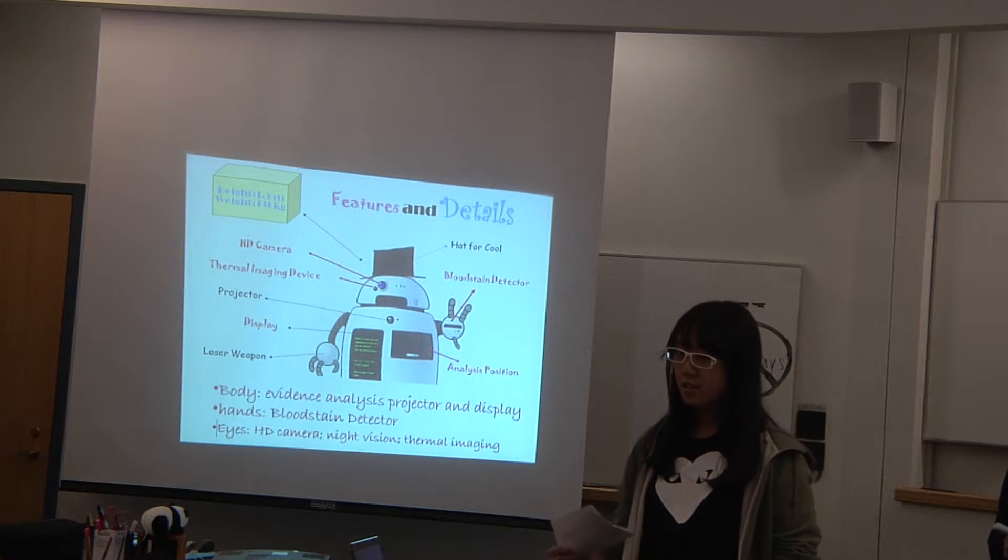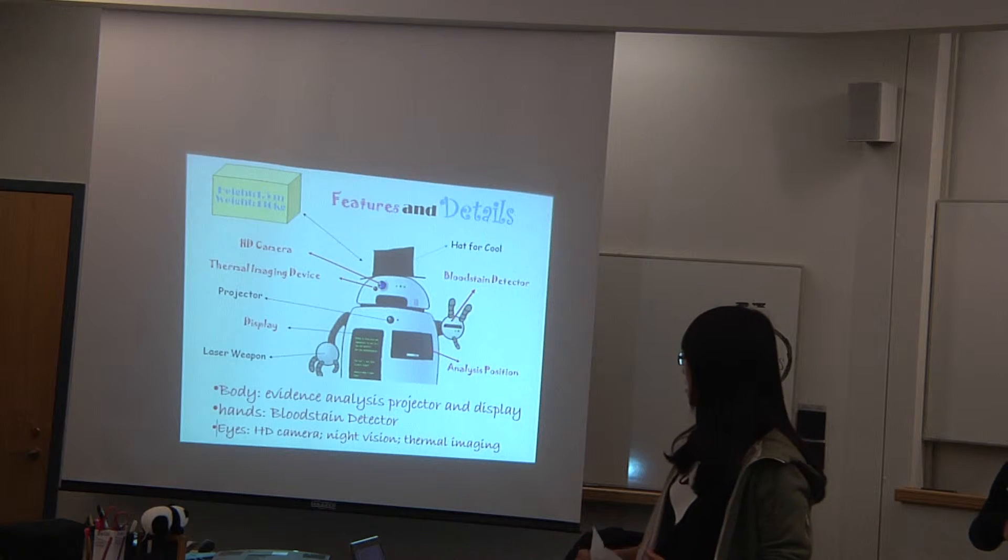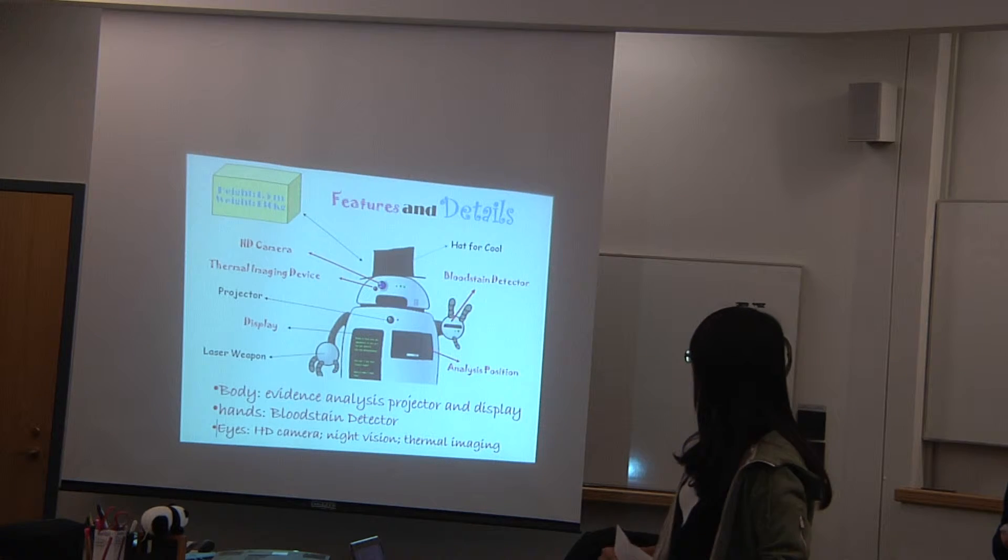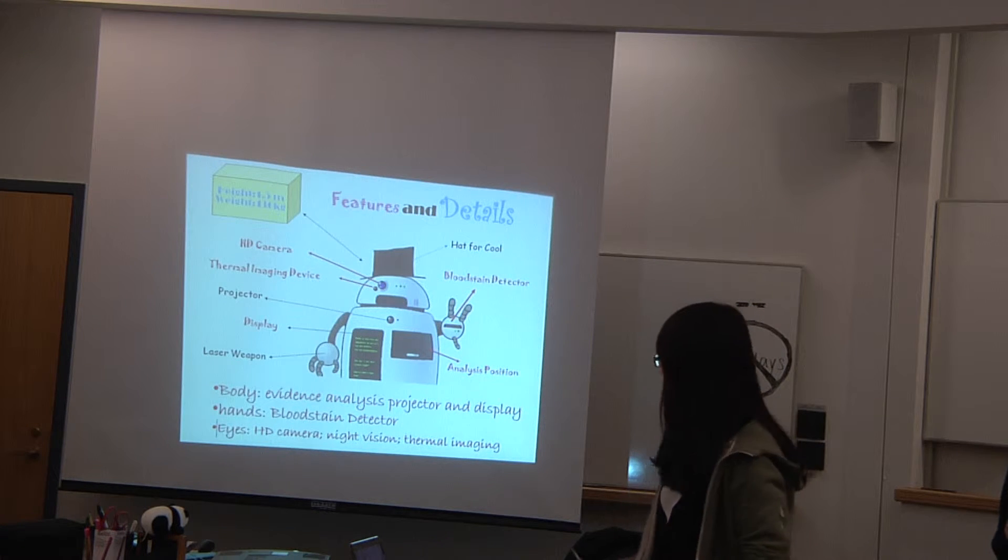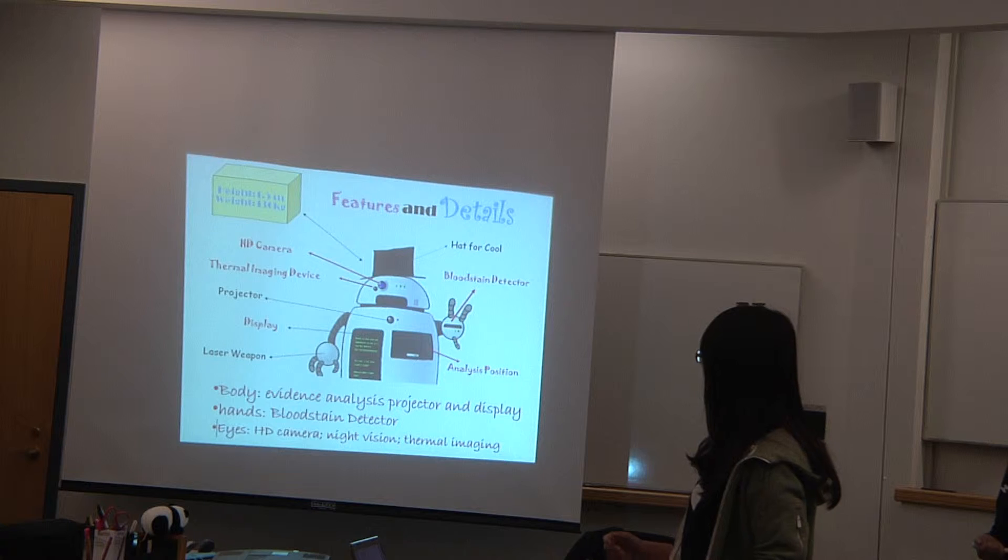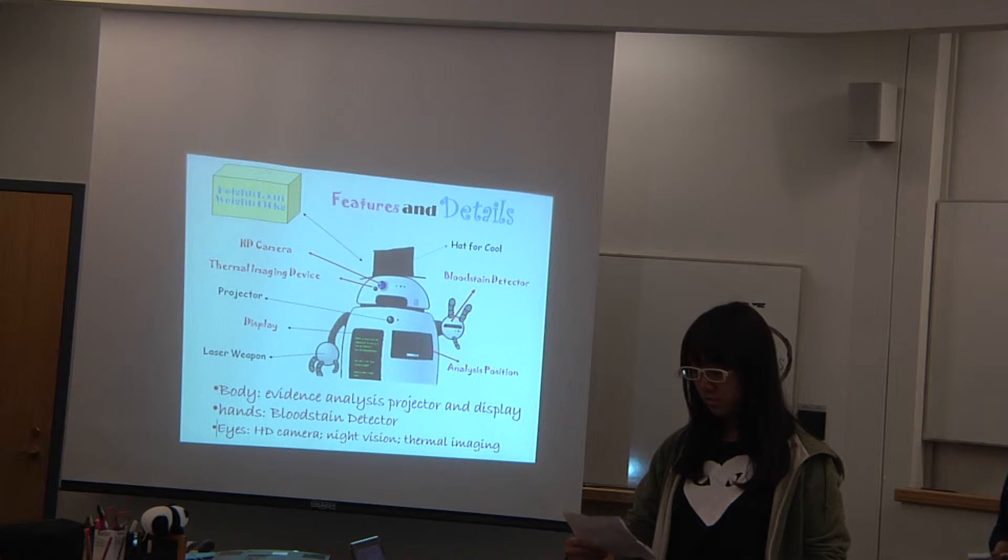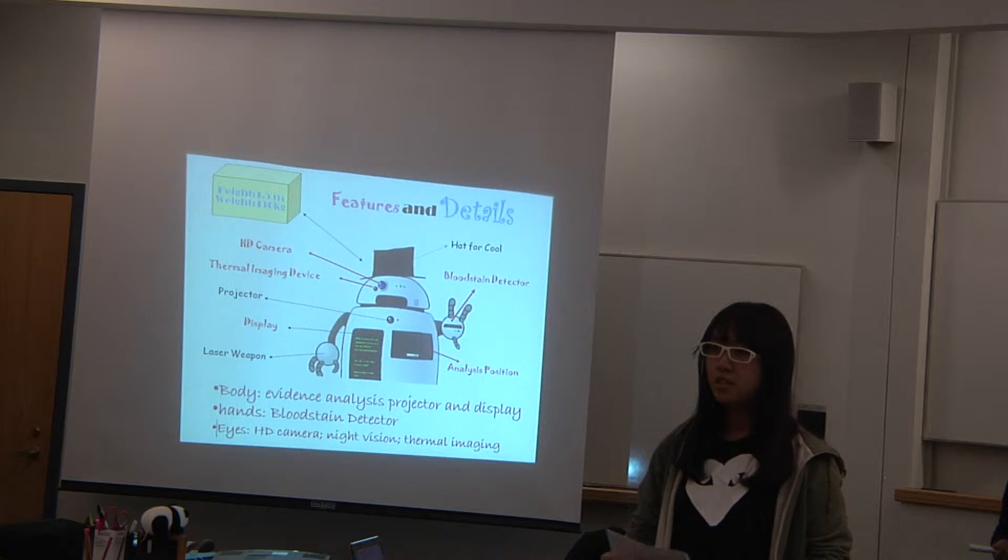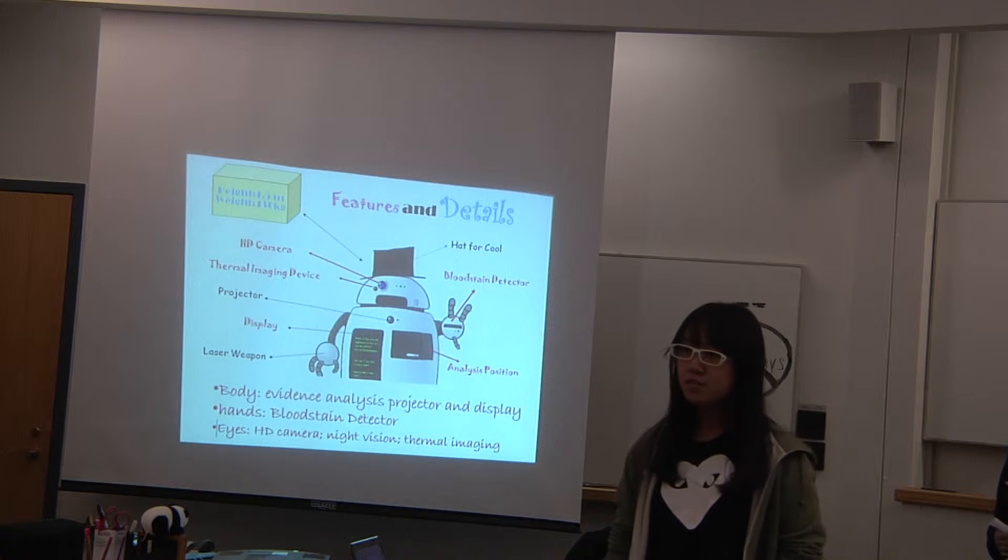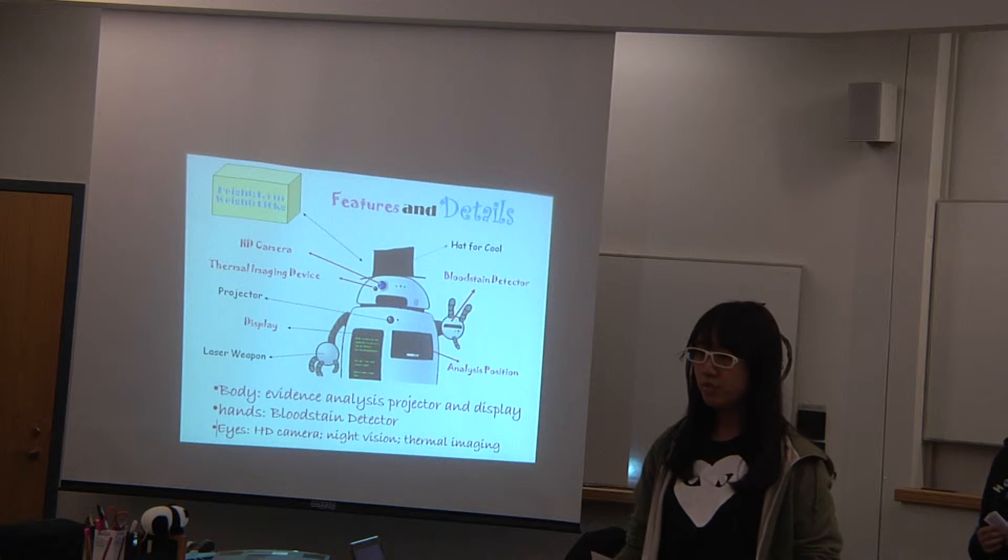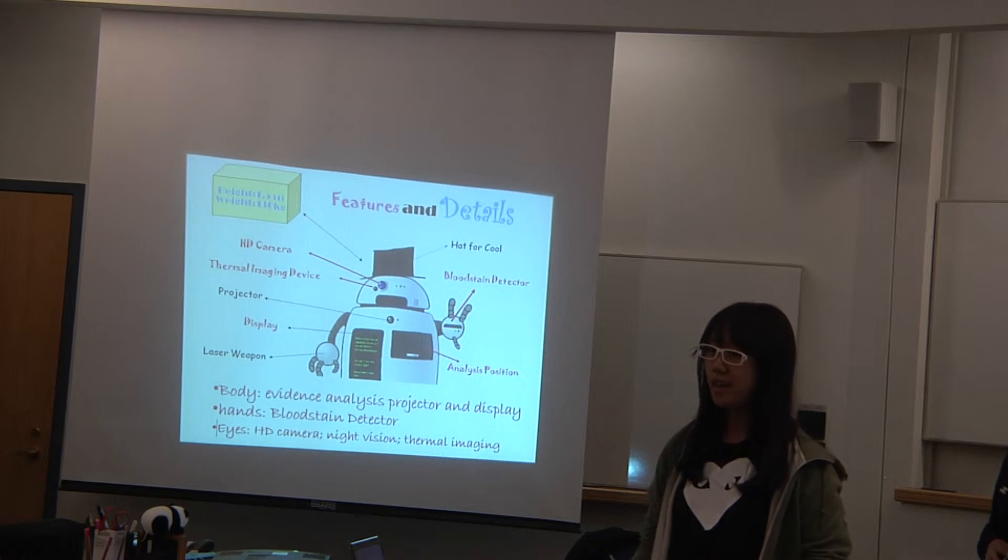The second one, the blood scan detector in his head, has the same use for the evidence and analysis projector. The third one, HD camera, light, night vision, and thermal imaging in his eyes. It is very easy to search the criminals and help the policeman to find some evidence.